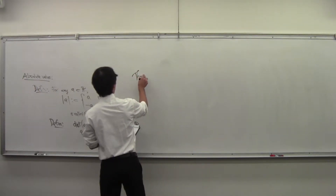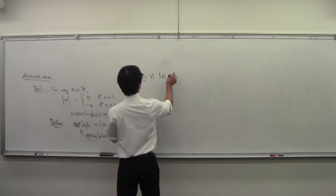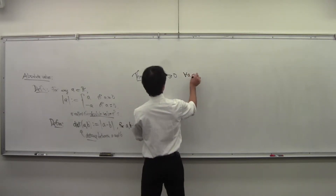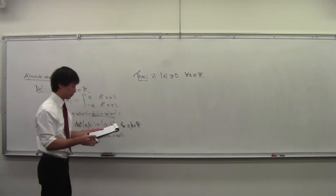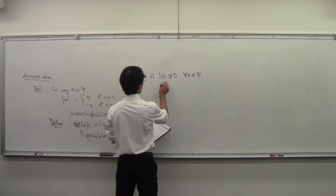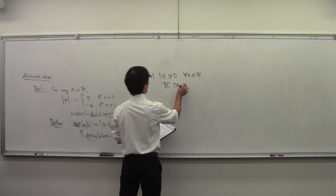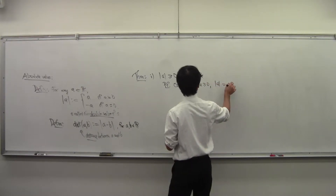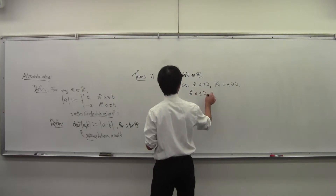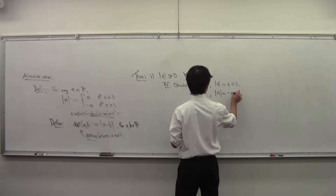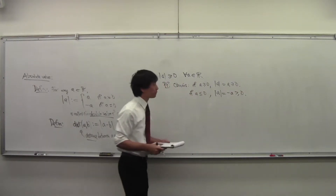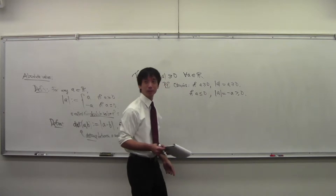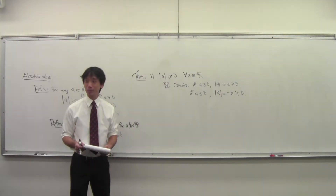A bunch of properties of the absolute value. First, that the absolute value is always greater than or equal to zero, for all a in the reals. The proof is obvious: if a is positive, then the absolute value of a is a, which is positive. If a is negative, then the absolute value of a is negative a, which is greater than or equal to zero — because a being less than zero, you multiply it by something less than zero, you flip the sign. Now we can flip the sign using these properties of ordered fields.